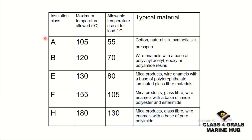Starting with Class A insulation: the maximum temperature allowed is 105 degrees centigrade, and at full load the allowable temperature rise is 55 degrees. The typical materials are cotton, natural silk, synthetic silk, and press pan.